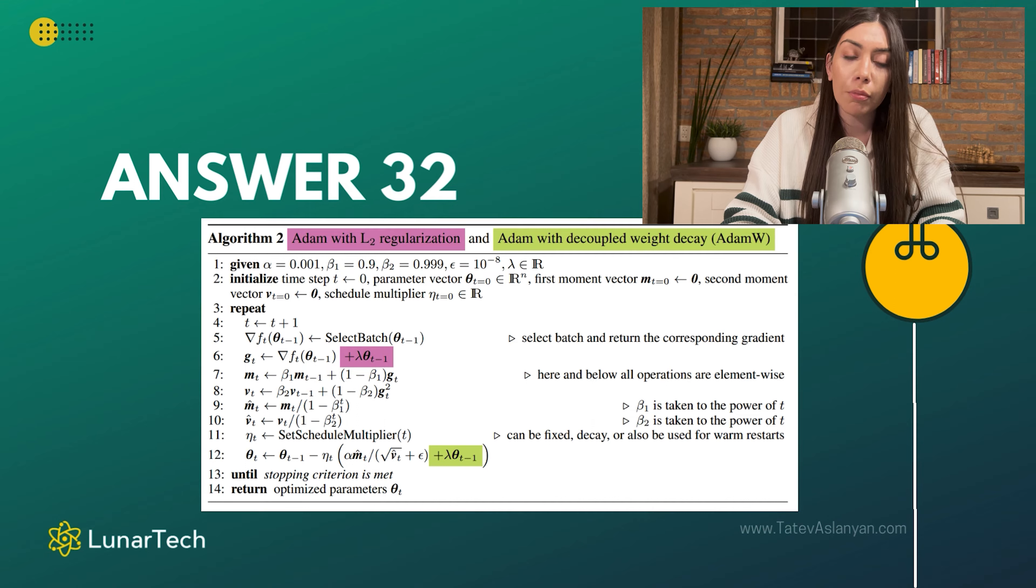Most of the time when we are performing regularization with Adam, let's say we are using L2 regularization with Adam in order to penalize large weights and address the overfitting problem of the algorithm, then Adam has shown in the industry when training different deep neural networks to not generalize very well and to solve this problem of overfitting.